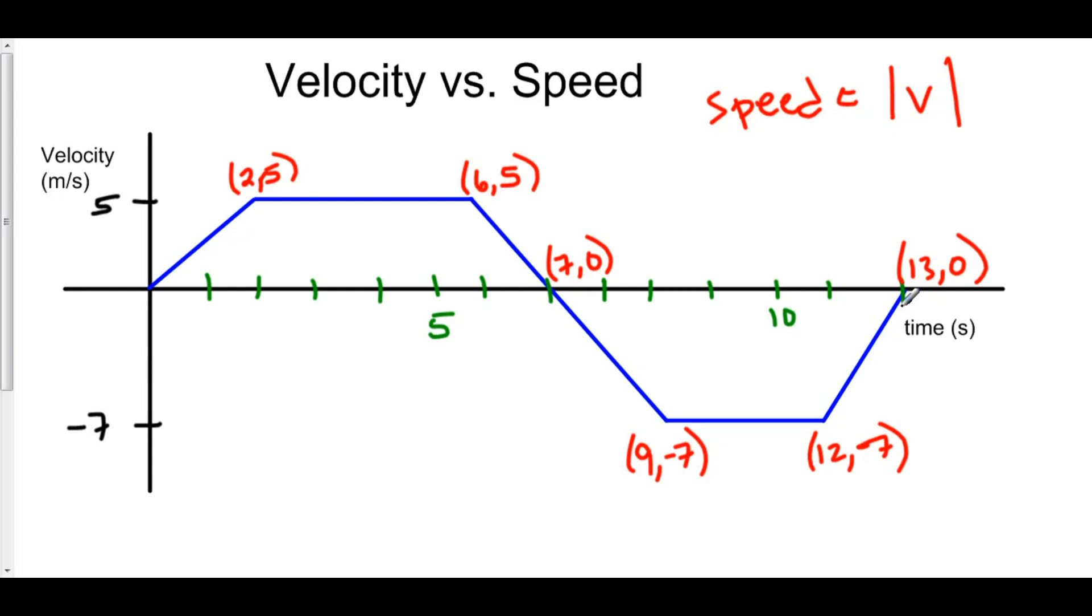So, I drive the speed limit 65 miles per hour on the freeway. And when I drive to school, I'm driving at a velocity of 65 miles per hour. However, when I drive home, I'm driving at velocity negative 65 miles per hour because I'm going in the negative direction.